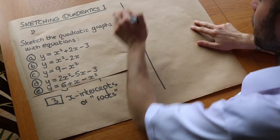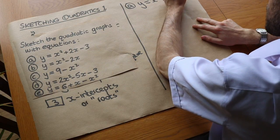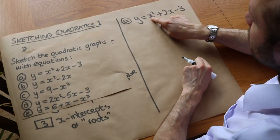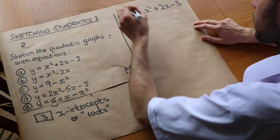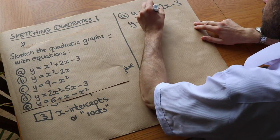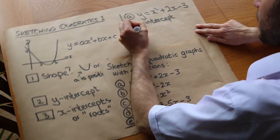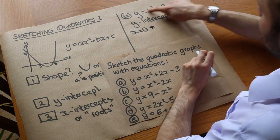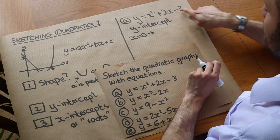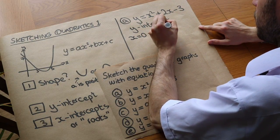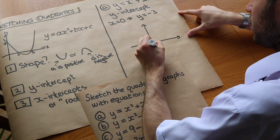Now let's look at some examples. This first one: y equals x squared plus 2x minus 3. The number in front of x squared is implicitly 1, and because 1 is a positive number, it's going to be a smiley face shape. Now let's find the y-intercept. When x equals 0, y is 0 squared plus 2 times 0 minus 3 — 0 squared is 0, 2 times 0 is 0, and then we're subtracting 3 — so y equals minus 3.